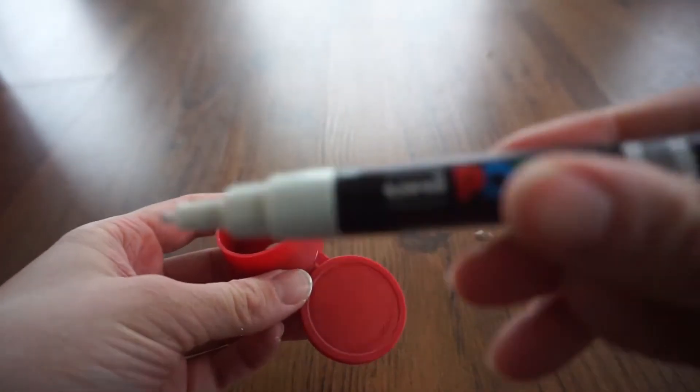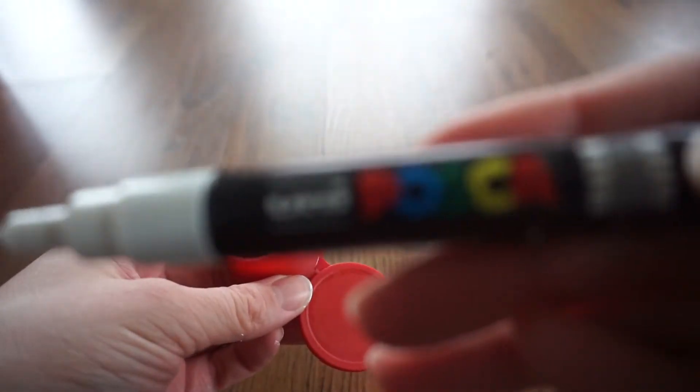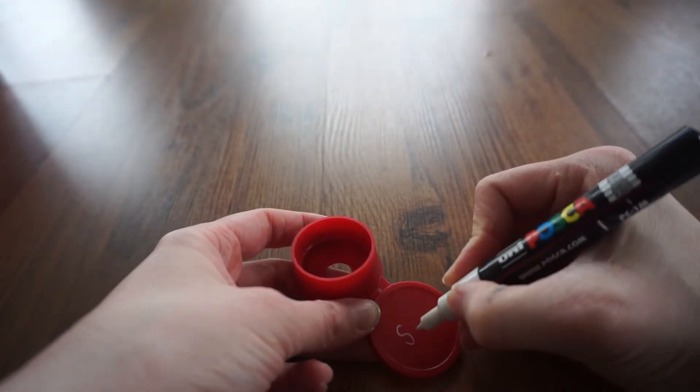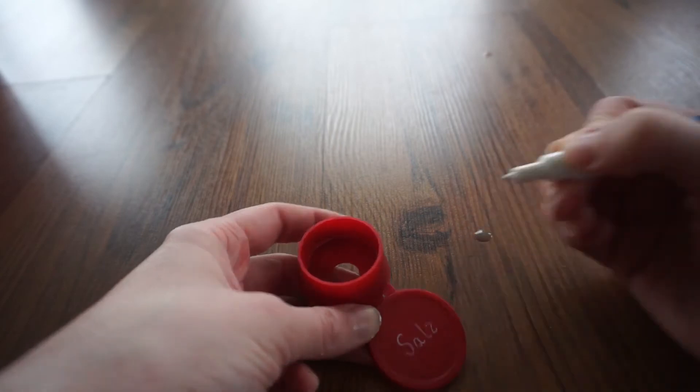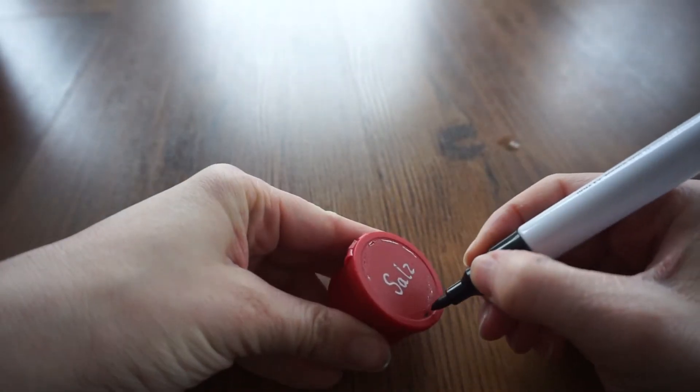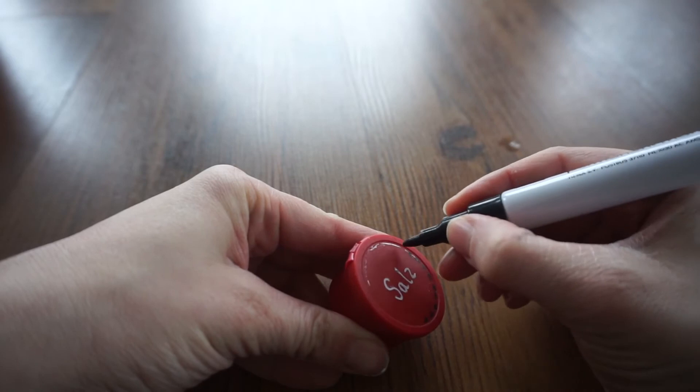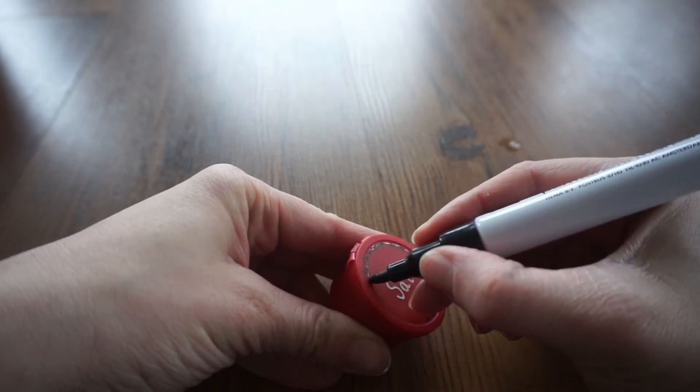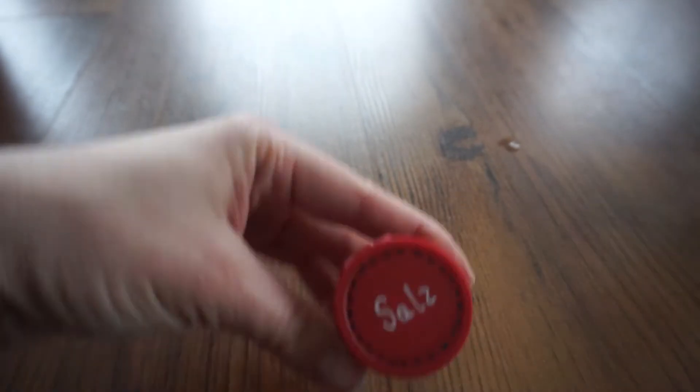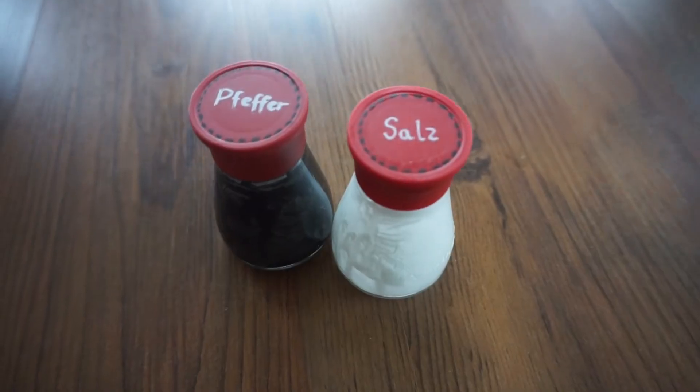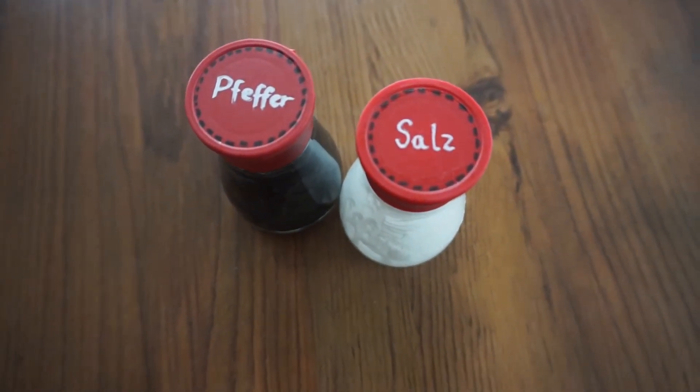Mit einem weißen Posca-Pen schreibe ich auf den Deckel Salz. Und mit einem schwarzen Edding verziere ich noch den Deckel. Auf gleiche Weise habe ich dann noch einen Pfefferstreuer gebastelt.